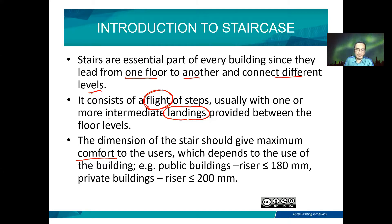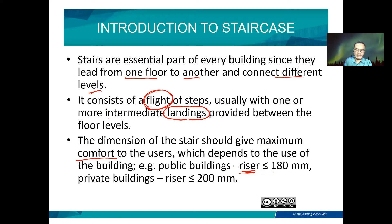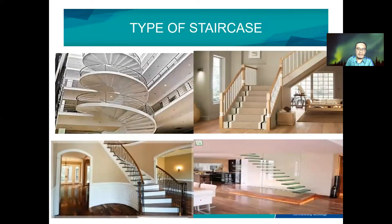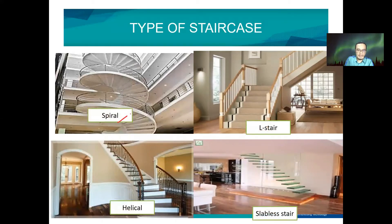For public buildings, the riser — this is another term you must be familiar with for staircase design — should be less than 180 mm, and for private buildings, the riser can be lower than 200 mm. The types of staircase include the spiral, the L-stairs, the helical, or the slab-less stairs.